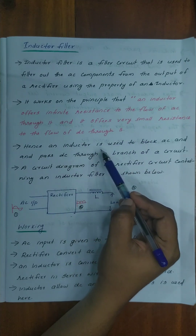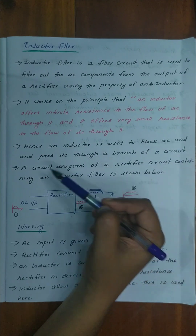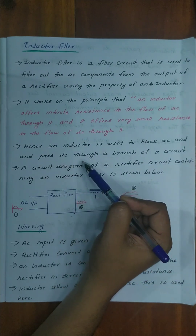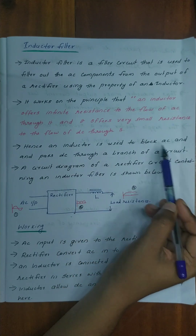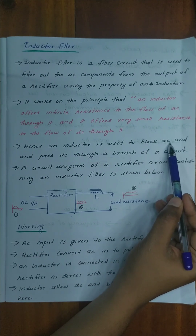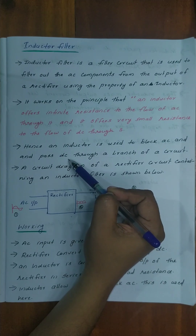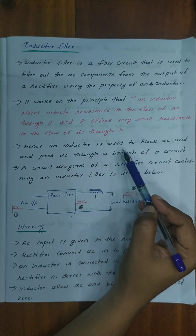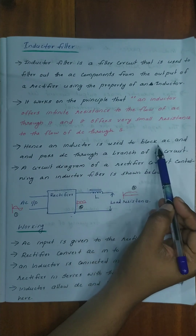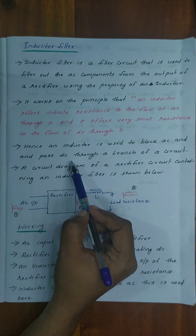Hence, an inductor is used to block AC and pass DC through a branch of a circuit. The inductor circuit has infinite resistance to AC and very small resistance to DC.